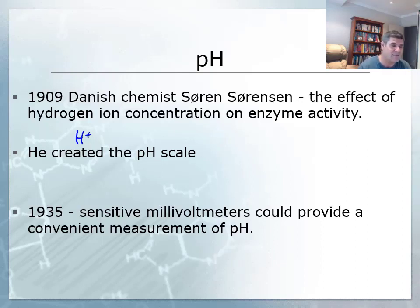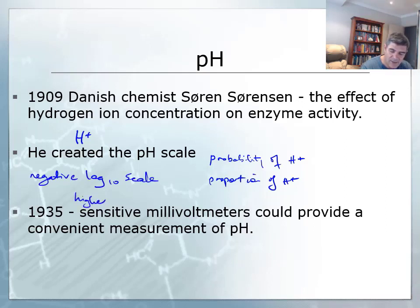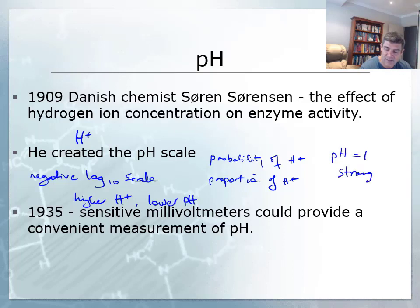The idea that hydrogen ion concentration could actually impact on enzyme function was a pretty important idea, and one about which we are still learning even 100 years later. So it was Sorensen who created the pH scale. People get caught up with what the P in pH stands for — you can talk about this as a probability or proportion of hydrogen ions. The most important thing to be aware of is that pH is a negative log scale, a log base 10 scale. What that means is the higher the concentration of hydrogen ions, the lower the pH. So a pH of 1 is a stronger acid than a pH of 3 — you get smaller values and stronger acid solutions.